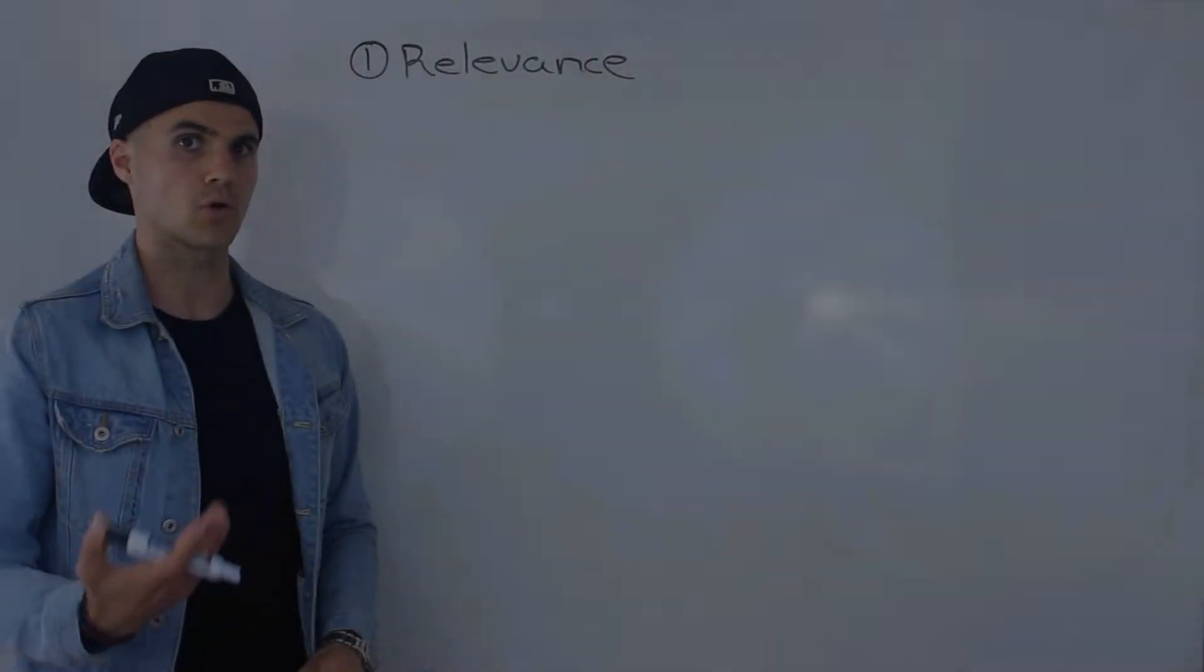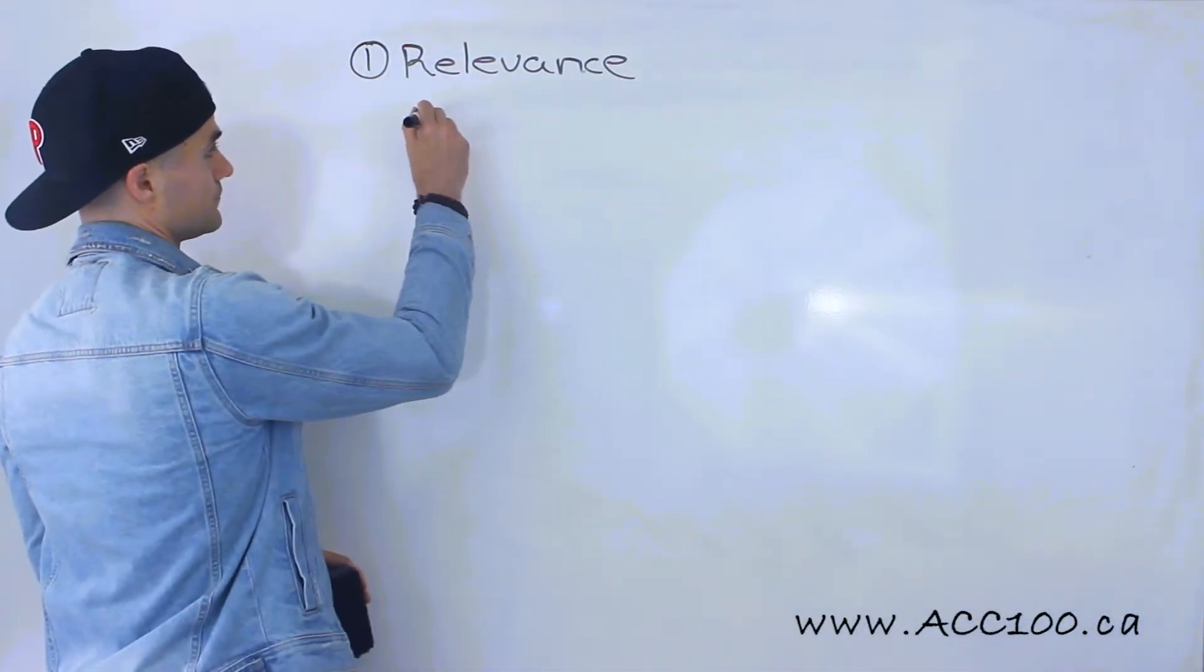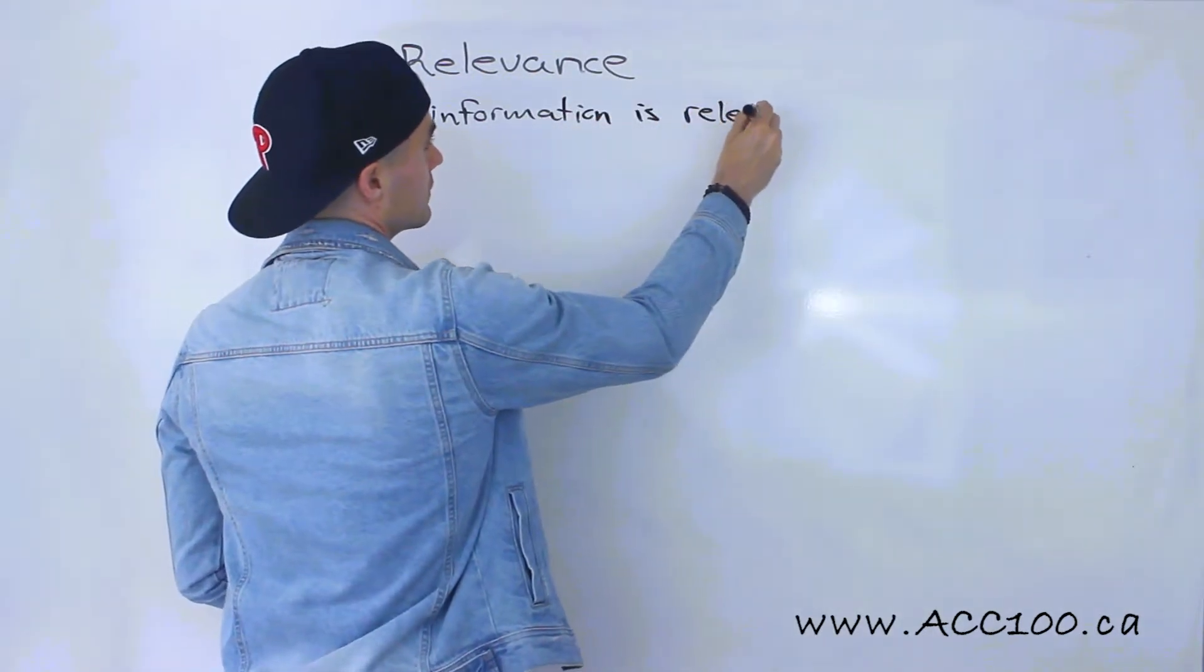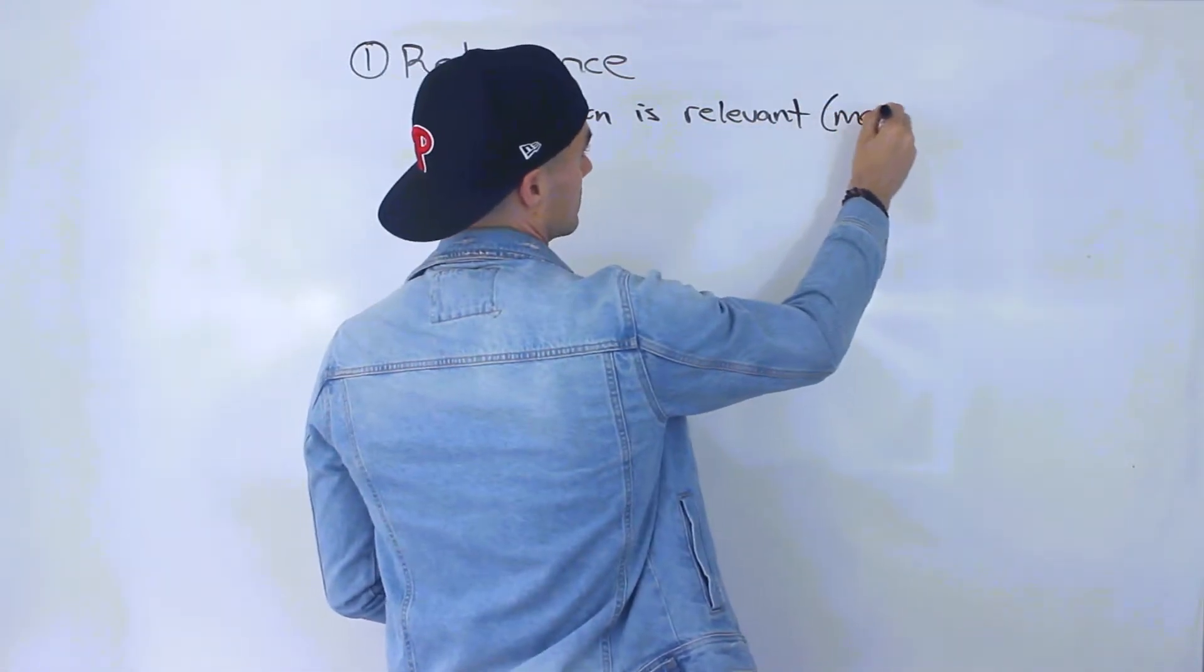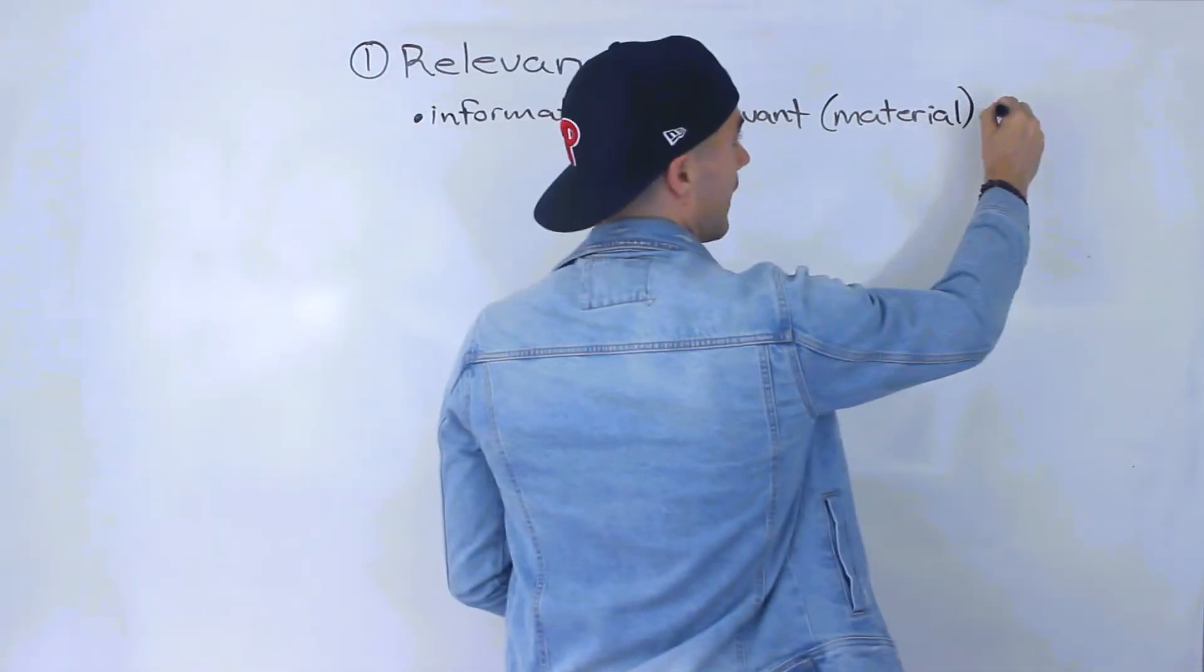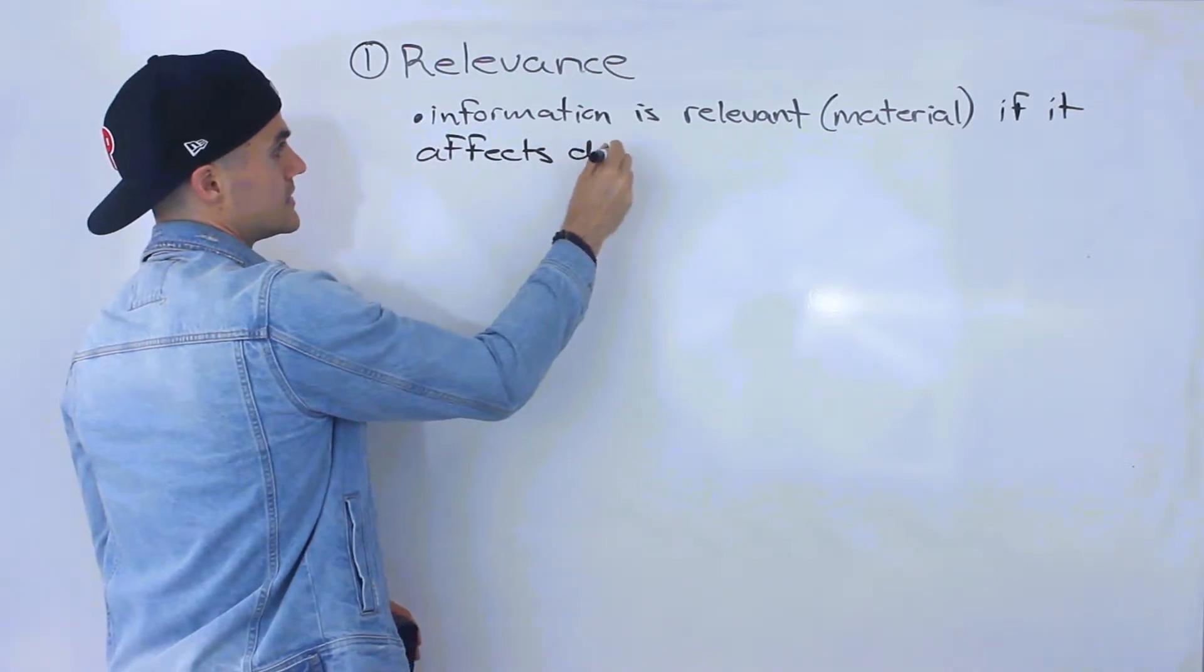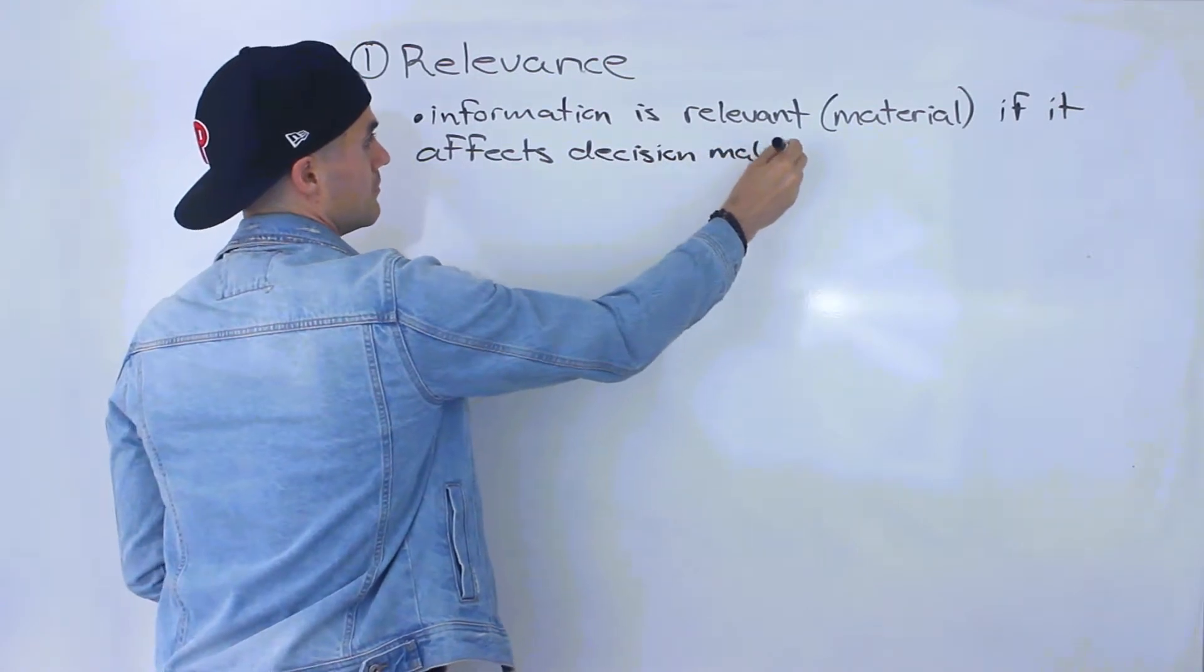So the first qualitative characteristic we'll go through is relevance. And in general, information is relevant. Sometimes a more technical term that you'll run into is material. So information is relevant or it's material if it affects decision making.